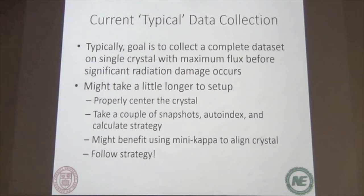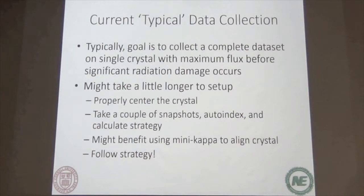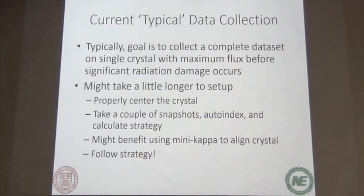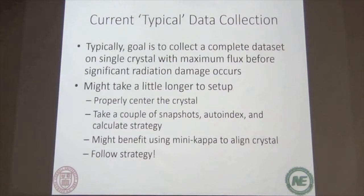This also refers to inverse beam experiments. For those who don't know, in inverse beam experiments you're trying to do anomalous data sets. You collect 20 degrees of data, rotate the crystal to 180, collect 20 degrees of data, go back to 20, collect up to 40, and then go to 200 to 220. You're collecting the Bijvoet pairs within a pretty close time frame, which minimizes the radiation damage effect on the time between when you started and when you got the Bijvoet pair.